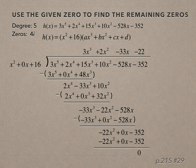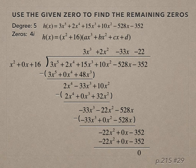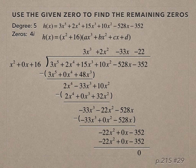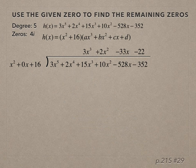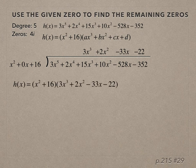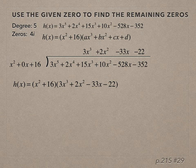When I have a remainder of 0, I've figured out another way to write the original polynomial function. We can write it as the divisor times the quotient. So our original h(x) can be rewritten as (x² + 16) times that quotient, which is 3x³ + 2x² - 33x - 22.